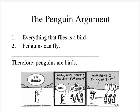So we can see that this argument is also valid, but it's not sound either. Both of the premises are false, but the conclusion is true. It just doesn't have to be true based on the truth of the premises. In other words, it's not true because the premises are true — it's true because of some other contingent fact about the world, namely that penguins are birds.